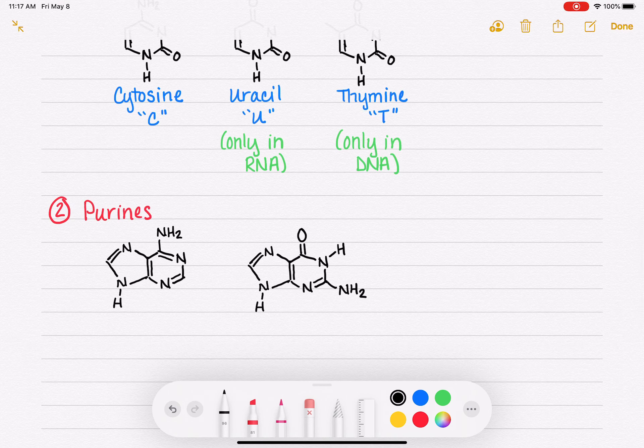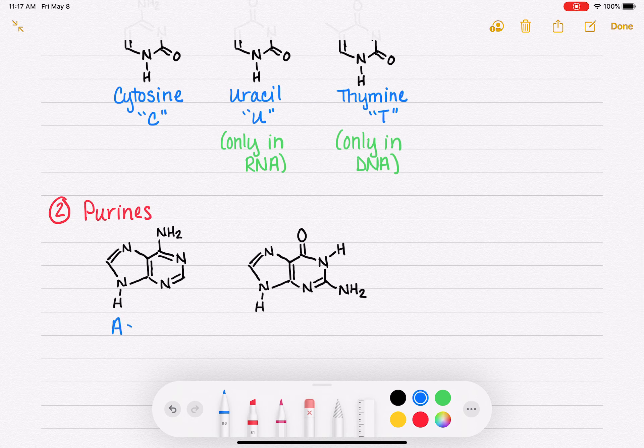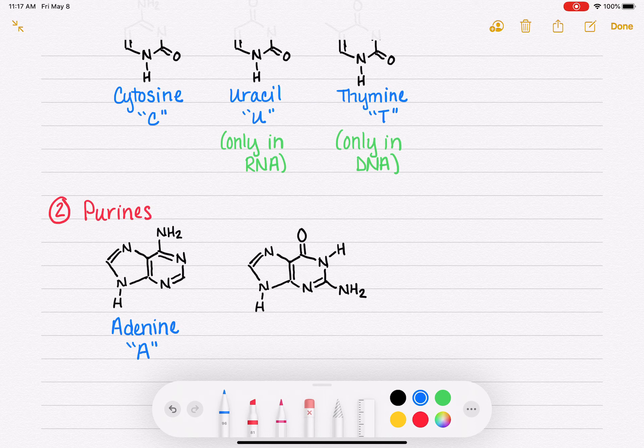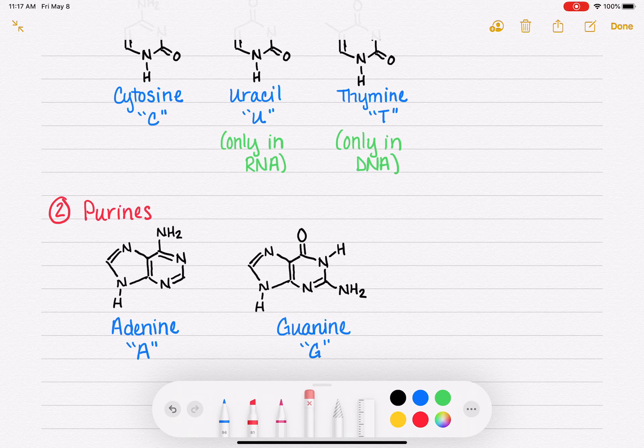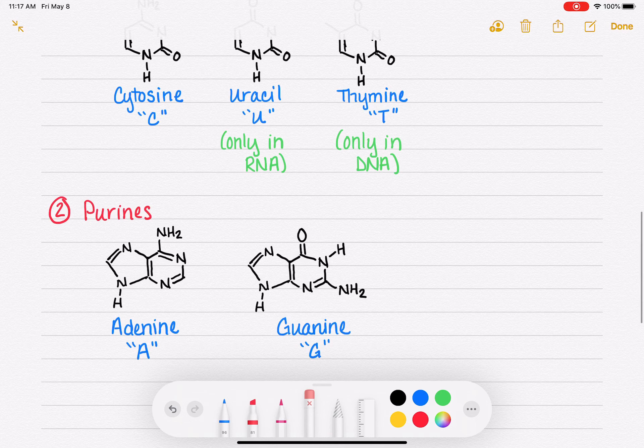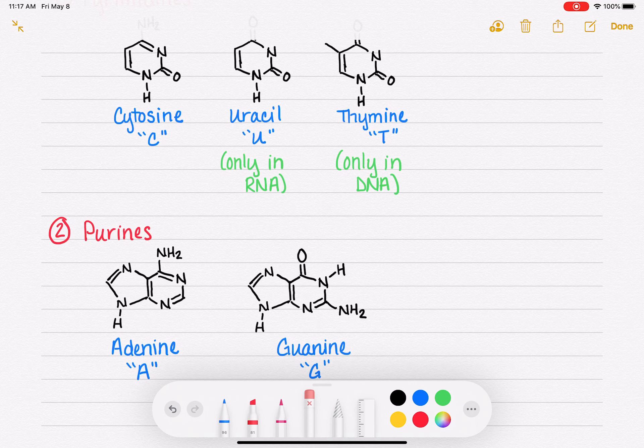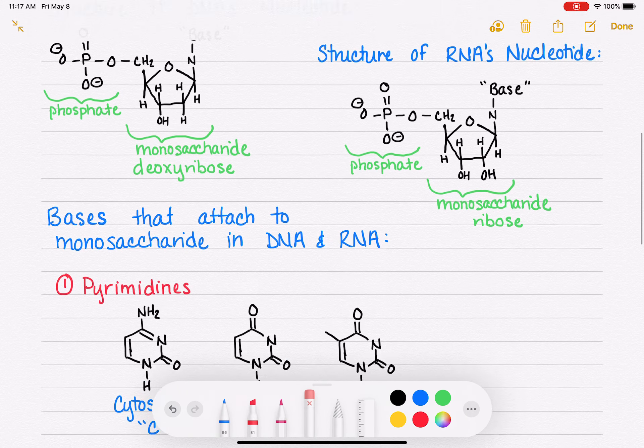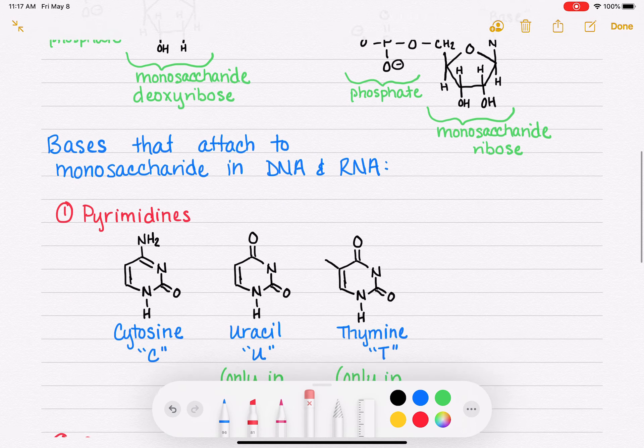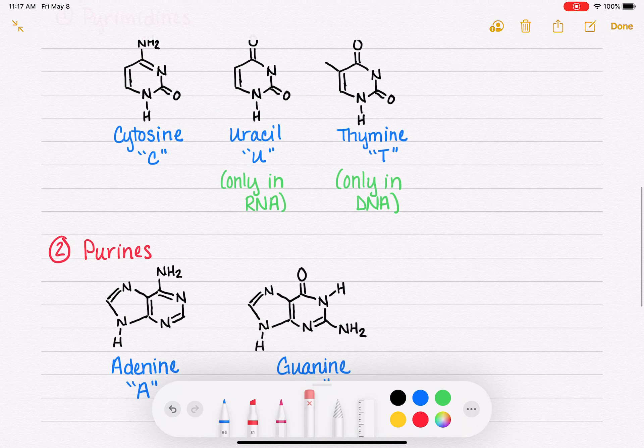So these two are called adenine on the left, which is abbreviated A. And guanine on the right, which is abbreviated G. And cytosine, adenine, and guanine, they are all used in both RNA and DNA. So those two, uracil and thymine, are the only ones that have restrictions in terms of which type of nucleotide they're allowed to attach to. So those are the five bases.